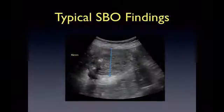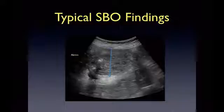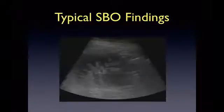In this image, there is a dilated loop of small bowel measuring 46 mm in diameter with a small amount of free fluid between the loops, or tanga sign, as indicated by the white arrow. This free fluid should raise concern for bowel strangulation.